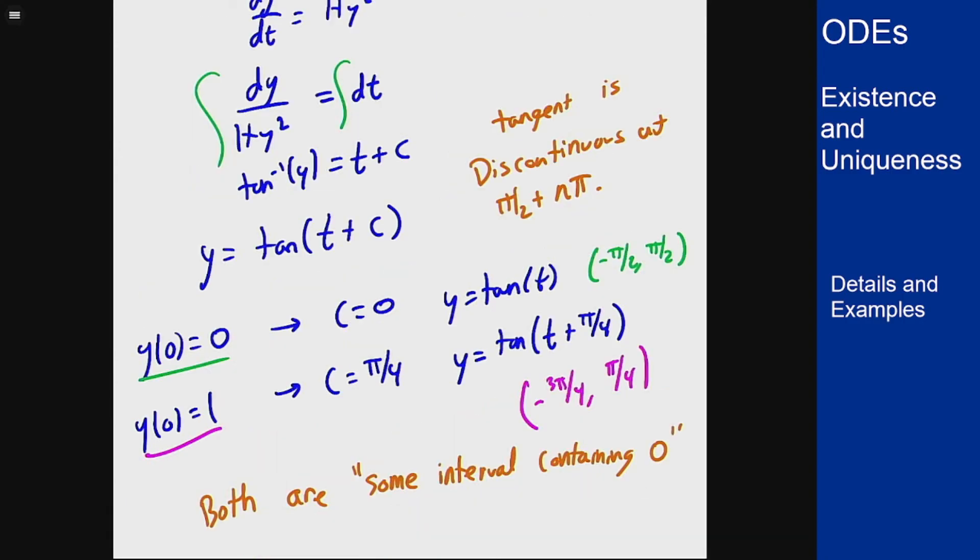Because just based on 1 + y² you can't extract tangent unless you can solve the equation. And the same goes for anything else you want to do. You have to actually solve it to get these intervals directly. Otherwise your best answer is some interval containing 0.